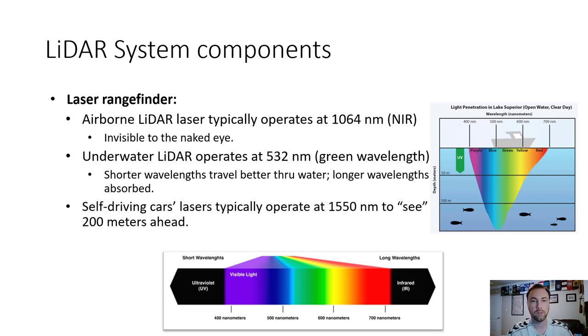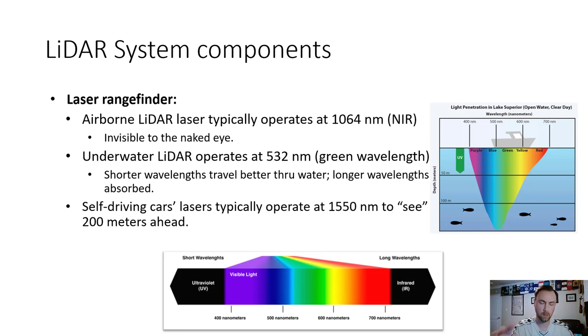Self-driving car lasers typically operate at 1,550 nanometers to see 200 meters ahead, which is better suited for traveling farther distances on the surface rather than underwater.